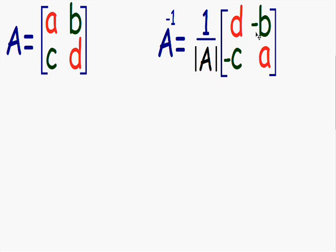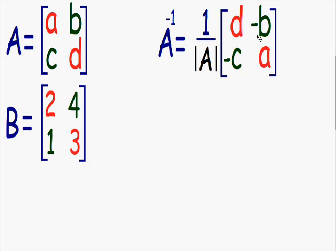So let's use this formula to find the inverse of a 2 by 2 matrix using real numbers. Here we have the 2 by 2 matrix B with the numbers 2, 4, 1, and 3. The first thing you want to do is find the determinant of this matrix B. To find the determinant of a 2 by 2 matrix, multiply the red diagonal, then multiply the green diagonal, and then subtract them from each other.